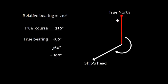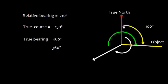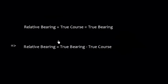Let me explain from this diagram. The true course is 250 degrees — that is this angle from true north to the ship's head. The relative bearing is 210 degrees, which is this angle from the ship's head to the object. The true bearing is the sum: 210 plus 250 equals 460 degrees. We subtract 360 degrees, so the true bearing from true north to the object is 100 degrees. Relative bearing plus true course equals true bearing.